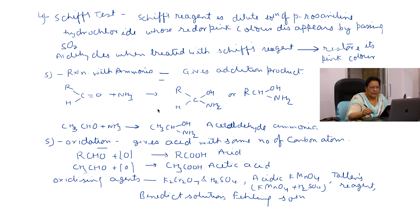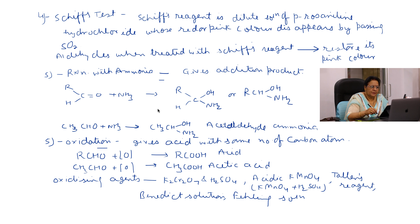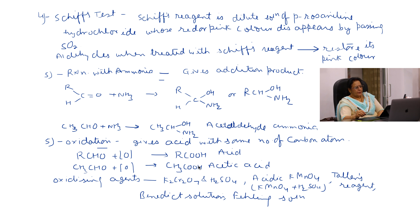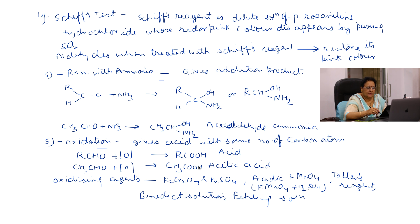The next property is oxidation. Aldehydes on oxidation give an acid with the same number of carbon atoms. Since two carbon atoms are present in acetaldehyde, we get an acid containing two carbon atoms — acetic acid. Strong oxidizing agents used for oxidation include acidic K2Cr2O7, acidic KMnO4, Tollens reagent, Benedict's solution, Fehling's solution, etc.